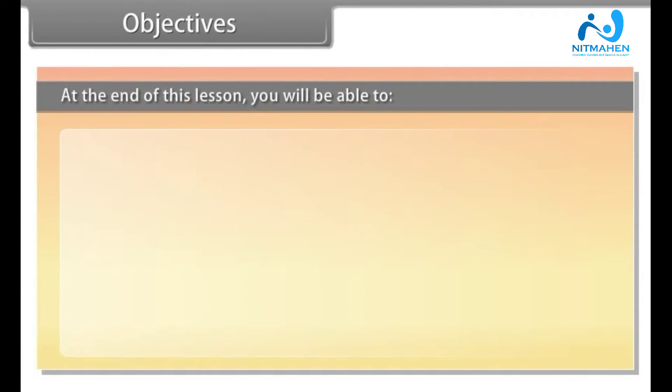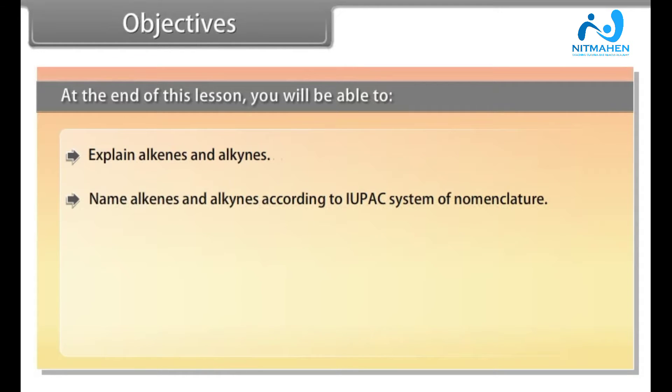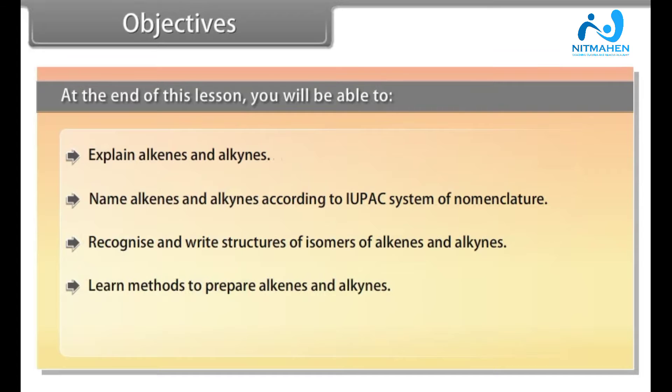At the end of this lesson, you will be able to explain alkenes and alkynes, name alkenes and alkynes according to IUPAC system of nomenclature, recognize and write structures of isomers of alkenes and alkynes, learn methods to prepare alkenes and alkynes, write the physical and chemical properties of alkenes and alkynes.